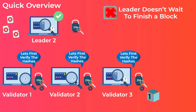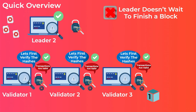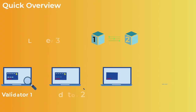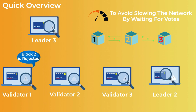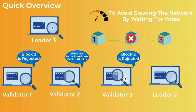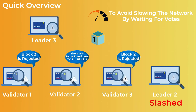When validators receive transactions from the leader, they first verify the empty hashes to confirm it is the leader's turn, then verify the transactions and update their ledgers. After the leader finishes the whole block, validators send their votes; if they accept it, the block is finalized. Notably, the next leader starts building on a block before it is voted on, to avoid slowing the network by waiting for votes. If the previous block is rejected, both blocks get discarded and the previous leader gets penalized.